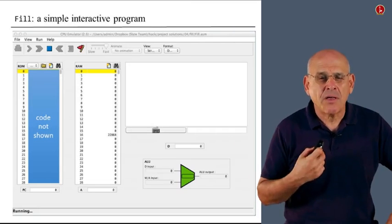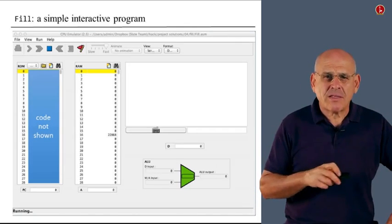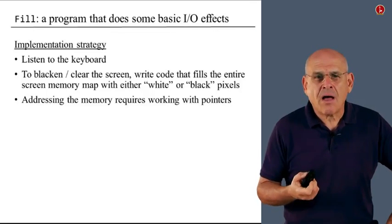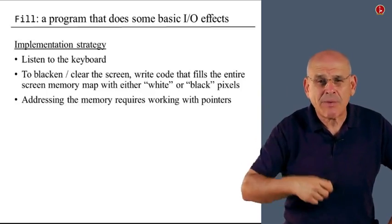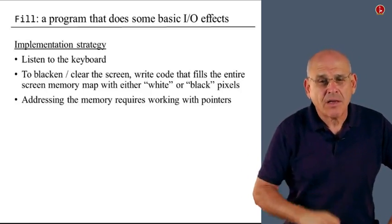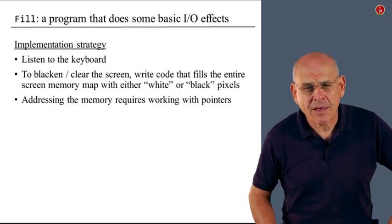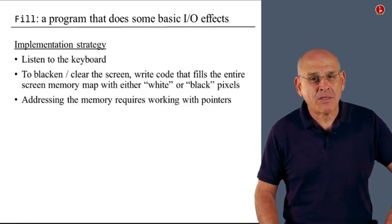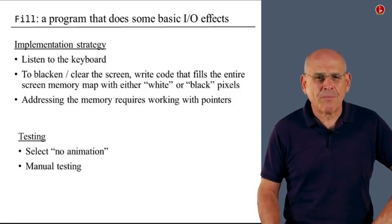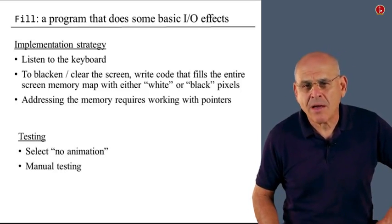It allows you to see how you can control peripheral devices using standard hack machine language code. So here is the general implementation strategy. Listen to the keyboard. To blacken or clear the screen, we write code that fills the entire screen memory map with white or black pixels. And in order to do this, we have to address every register in the memory map. And we do it using some sort of a loop that works with pointers. In a very similar way to what we did in the previous unit, when we discussed pointer manipulation. So you really have all the firepower that you need in order to implement this particular program.